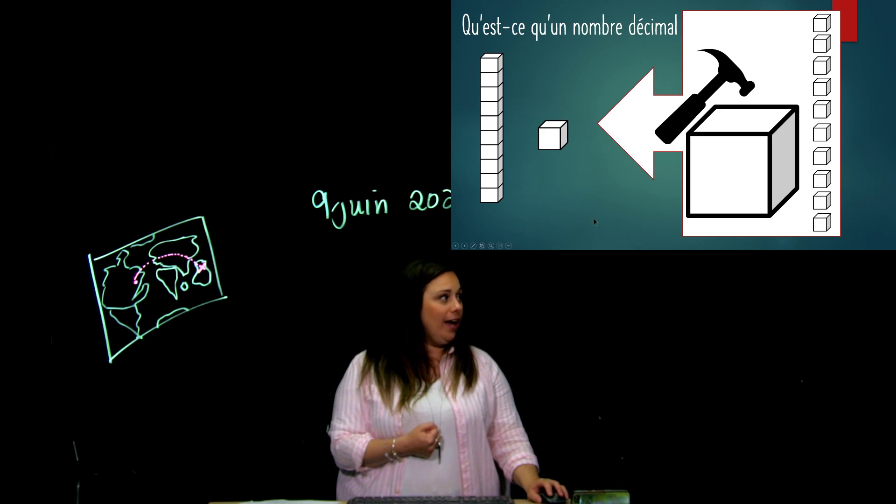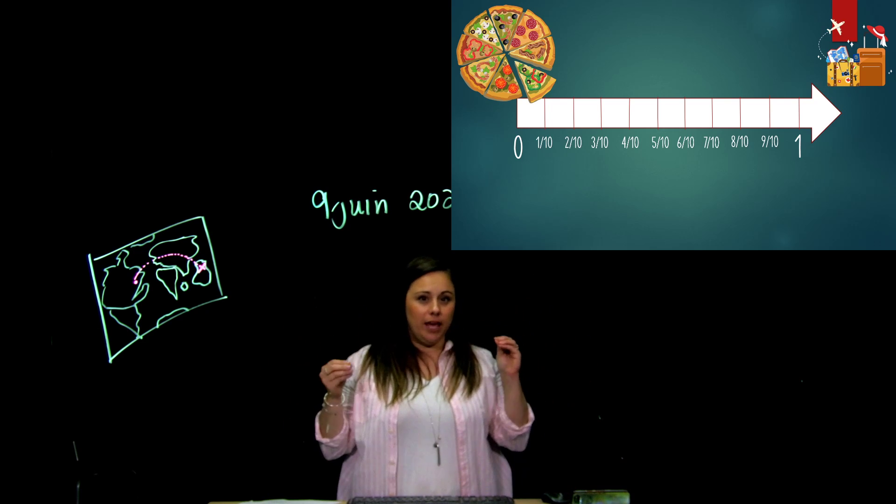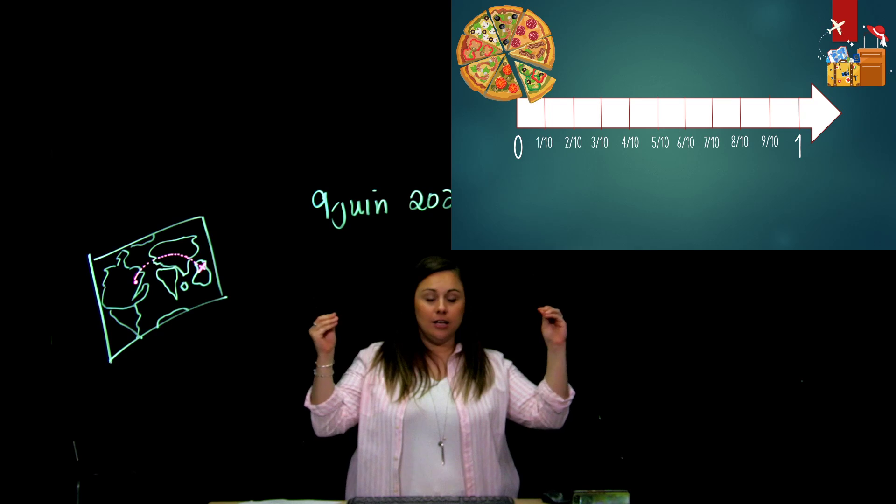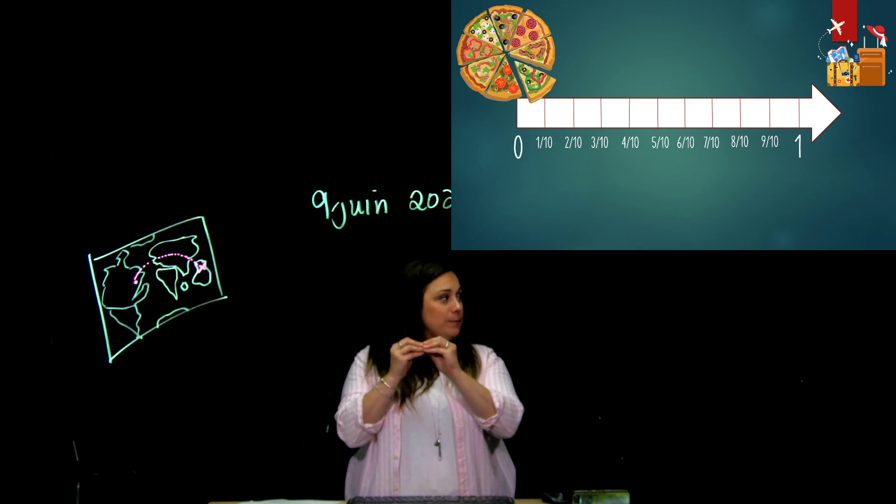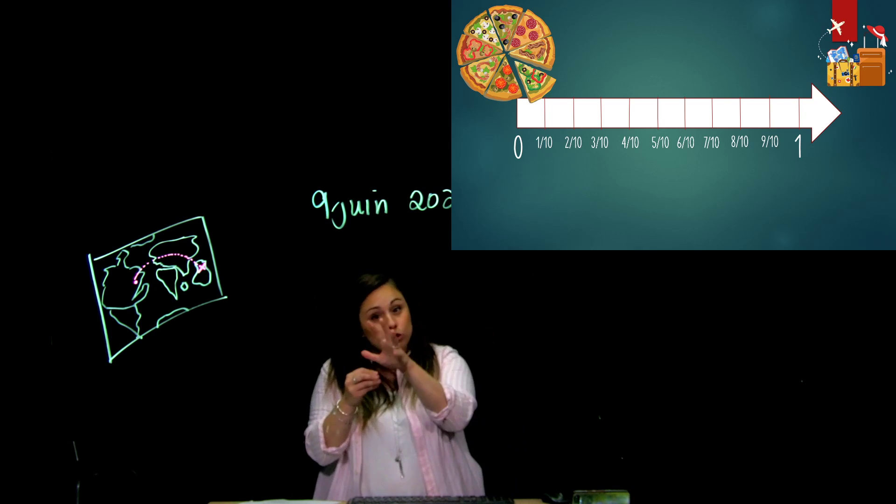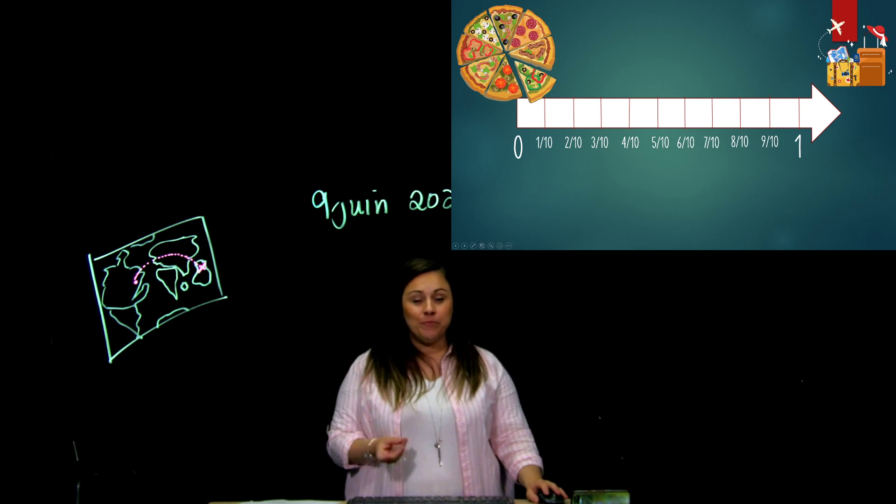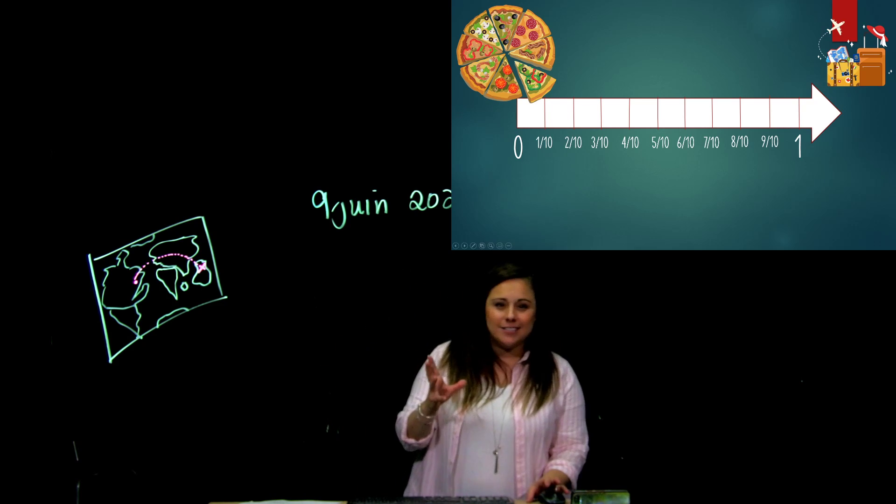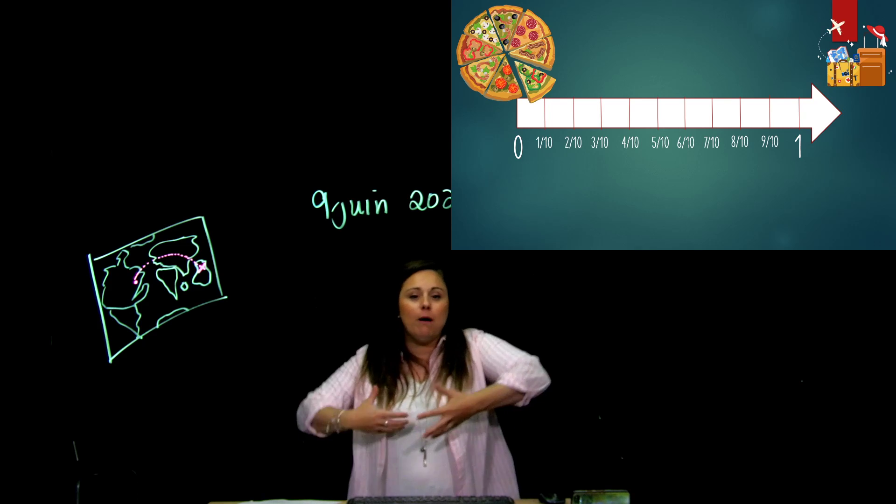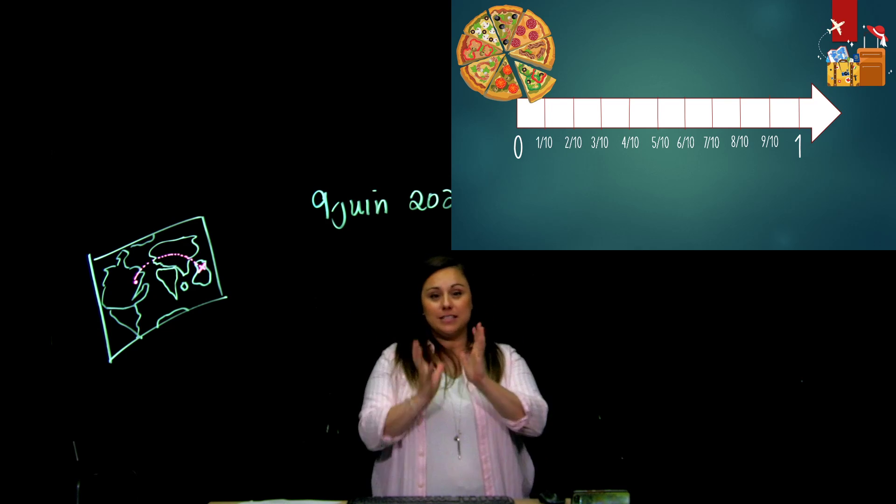Alors, je t'ai mis ça sur des droites numériques pour que tu comprennes bien. Entre zéro, j'ai rien, et un entier, il y a plein de petites parties. Et ces petites parties-ci, tu vois, je t'ai montré, c'est des fractions. Donc, un dixième, c'est une partie sur les 10 petites parties que je t'ai parlé tout à l'heure. Alors, souvent, dans des fractions, on parle d'une pizza, d'une barre de chocolat. On te parle d'un entier qui est divisé en certaines petites parties.